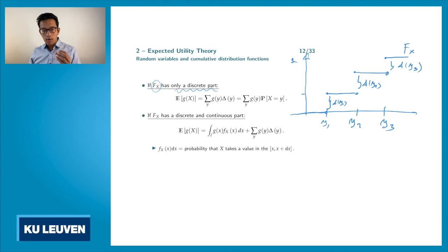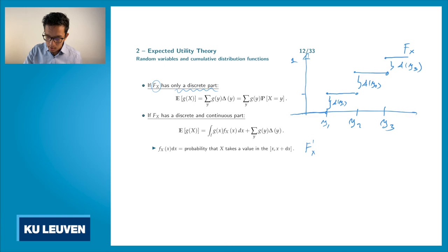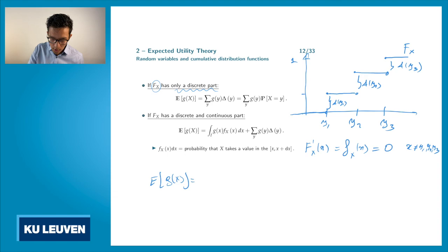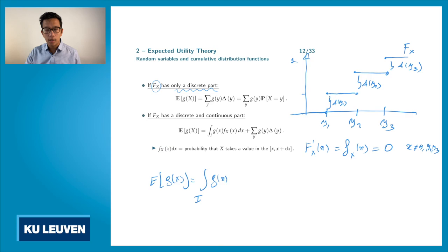If we take a value different from y1, y2, y3, the function is horizontal — flat — meaning that f'(x), the derivative of the distribution function, is equal to 0. So if you look at the expectation of g(X), we have an integral over all possible values of the random variable. I take the function g, apply it to each value the random variable can take, and weight it by dF_X(x).